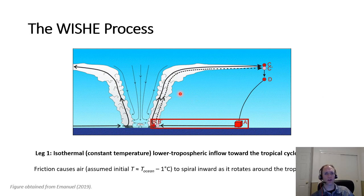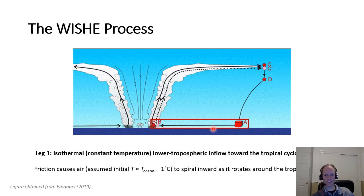Let's look at the WISHI process itself using a vertical cross-section schematic with height on the y-axis and radius on the x-axis. The center of the storm is between two thunderstorm towers sloping outward, and the cross section spans hundreds to over a thousand kilometers from the cyclone center. The process is depicted by four legs: A to B, B to C, C to D, and D back to A. Note there are also B′ and C′, which we'll highlight in the next series on tropical cyclone intensity change.